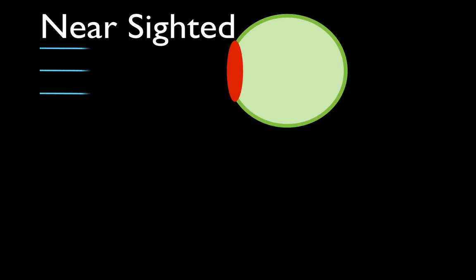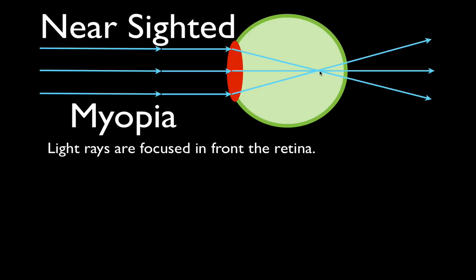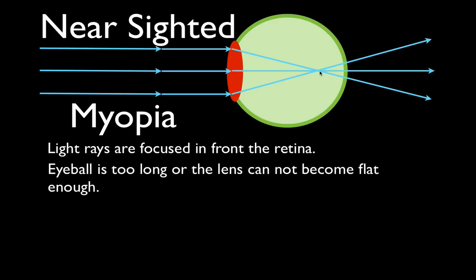Nearsightedness is just the opposite of farsightedness. Light rays come in, strike the lens, and are focused too near — in front of the retina. The medical term is myopia. The light rays are focused in front of the retina, which can happen because the eyeball is too long. If the muscles in your eye could flatten the lens, that would increase the focal length and move the focal point back to the retina, but it can't — though this accommodation ability can change as you get older.